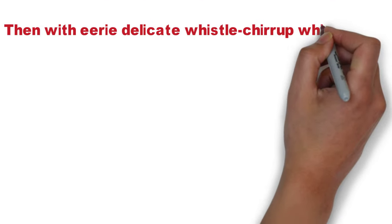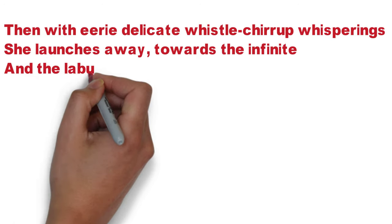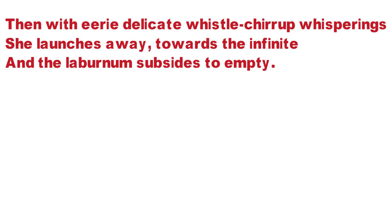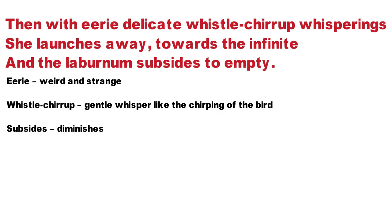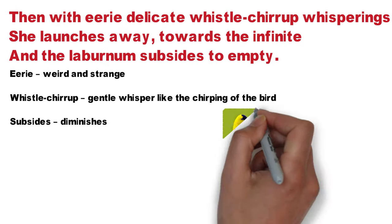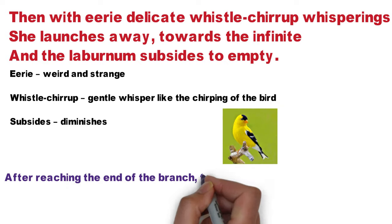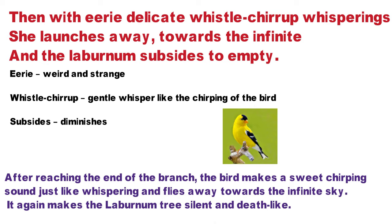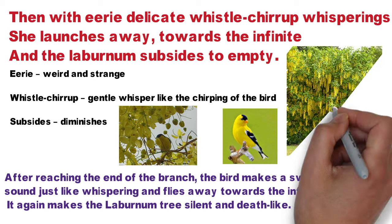Next stanza: 'Then with an eerie, delicate whistle — chewrap, whisperings — she launches away towards the infinite. And the laburnum subsides to empty.' Eerie — weird and strange. Gentle whisper like the chirping of the bird. Subsides — diminishes. Now after feeding the goldfinch bird to the young ones, the little ones make whisperings, giving sound. The tree becomes little by little, giving a death-like nature. The goldfinch bird is not even there — the tree returns to its dead-like nature.